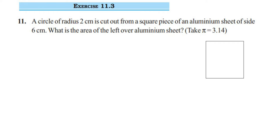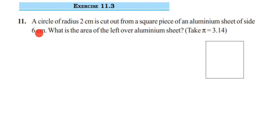Hi everyone, here is exercise 11.3, 11th question. This is from the perimeter and area chapter of class 7. The question is: a circle of radius 2 centimeter is cut out from a square piece of aluminum sheet of side 6 centimeter. What is the area of the leftover aluminum sheet? The pi value is 3.14.